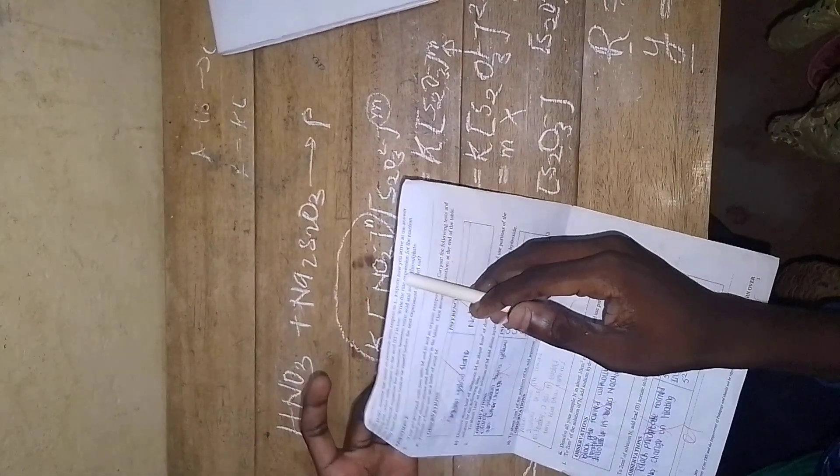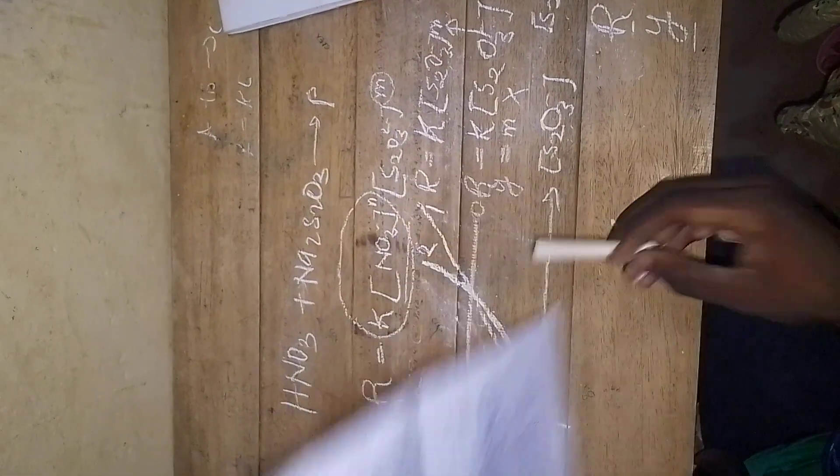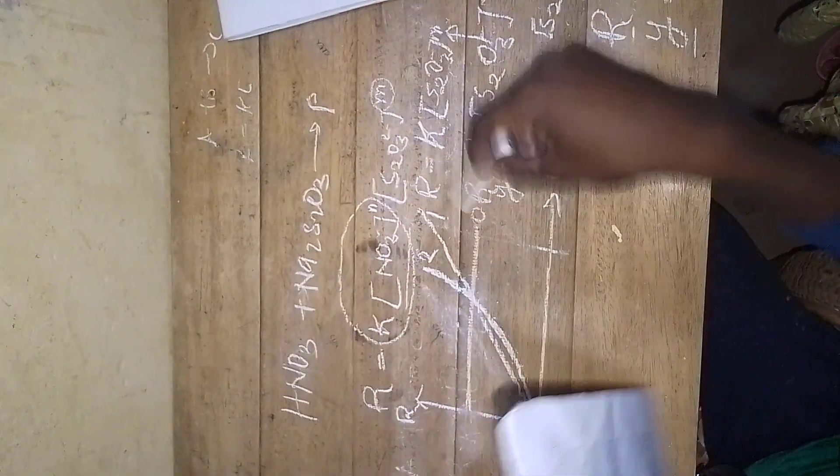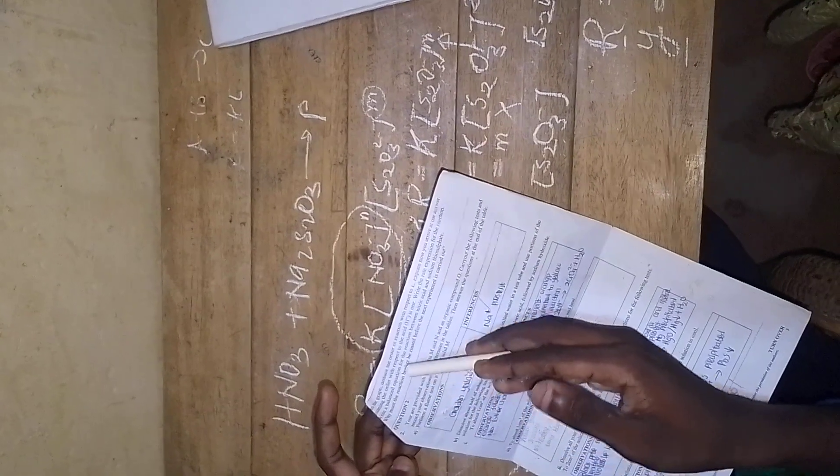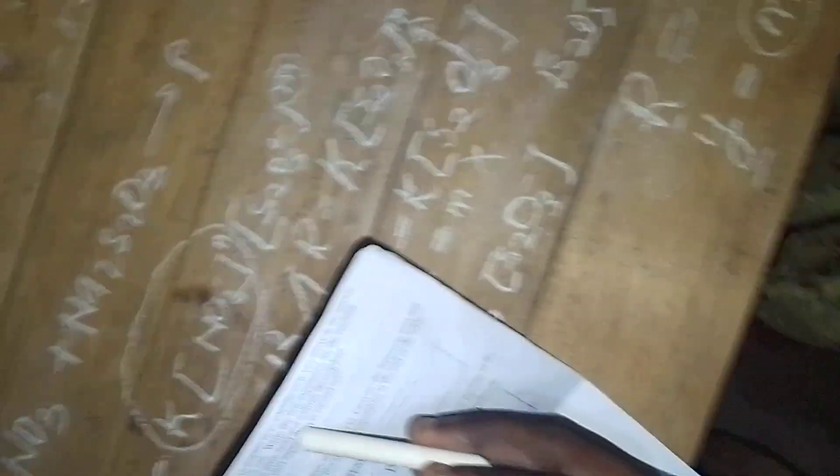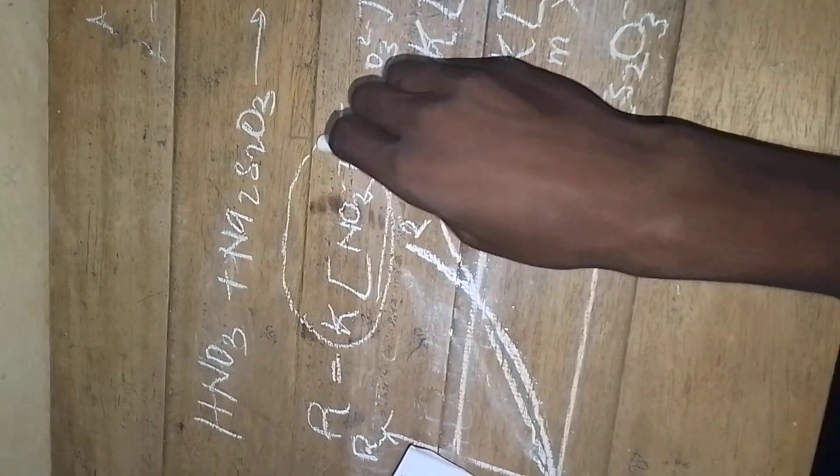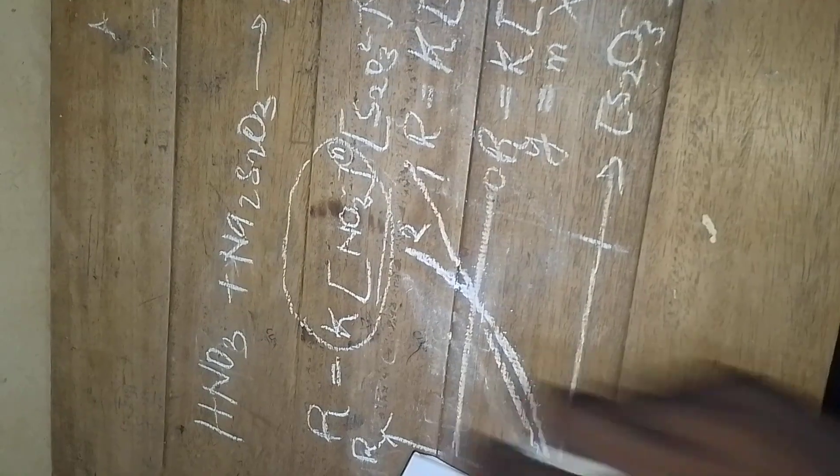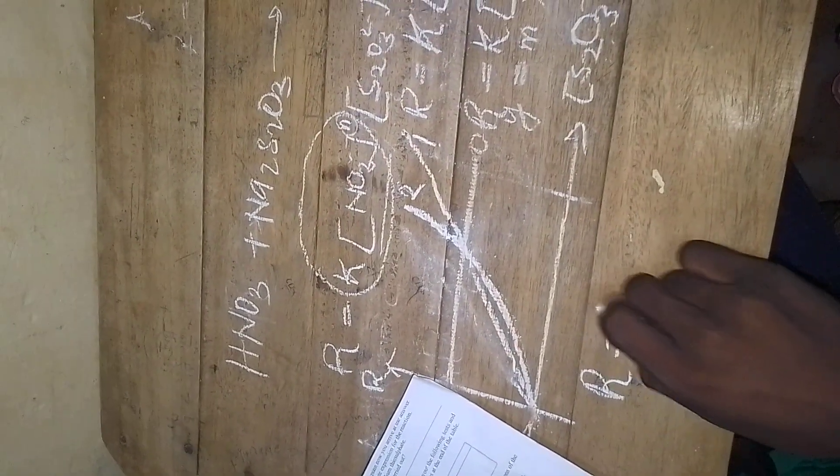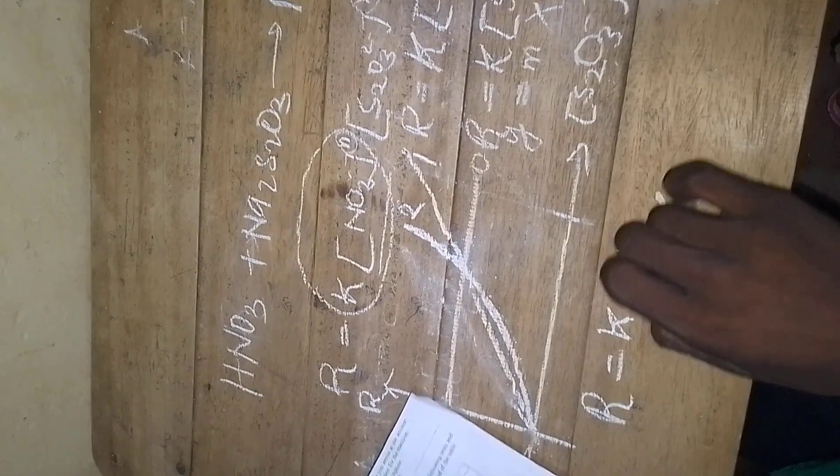It said explain how you arrive at your answer - that's just the explanation I was giving. Assuming now the order with respect to the acid is one, write the rate expression for the reaction. If the order with respect to the acid is one, then clearly my rate law will be equal to the rate constant times the concentration of...